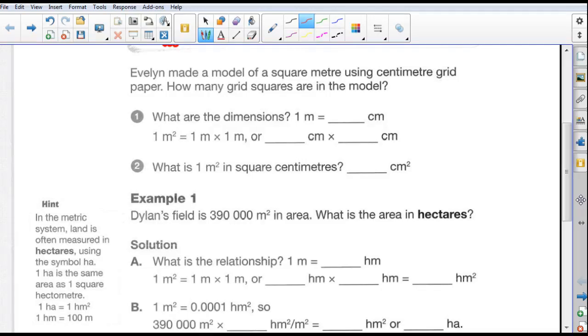Well, dimensions are one meter. We know that from our conversion chart, from your formula sheet, one meter is the same as 100 centimeters because it takes 100 centimeters to make one meter. One meter squared is one meter times one meter, or 100 centimeters times 100 centimeters. So what is one meter squared in square centimeters? Well, we just multiply 100 times 100, which is a one with one, two, three, four zeros after. One, two, three, four, which is 10,000. So one meter squared is 10,000 centimeters squared, which she's going to have on her grid paper, 10,000 little squares.